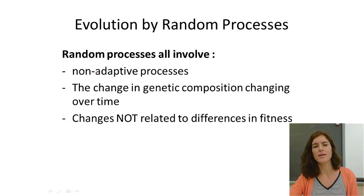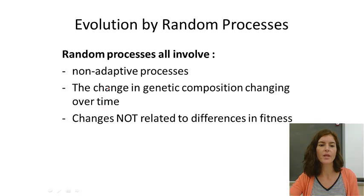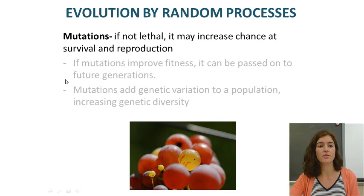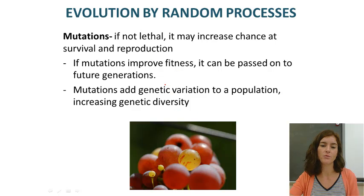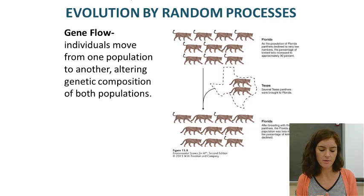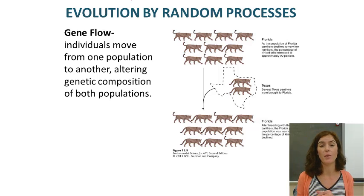There are also random processes — things that do not relate to adaptation or differences in fitness — but they do cause a change in genetic composition over time, which is evolution. One random process is mutation. Gene flow is another: it occurs whenever individuals move from one population to another, changing the genetic composition of both the population they left and the one they joined. This can be forced, as seen in Florida where the U.S. Fish and Wildlife Service introduced Texas Panthers to Florida.